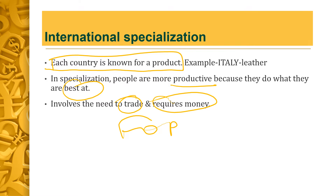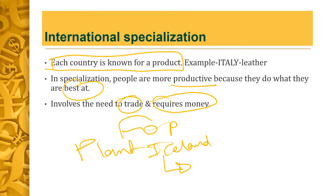Trade is important because, for example, to plant in Iceland it is very costly — they have to put up greenhouses and maintain the proper temperature and heat. So it would be much cheaper and better for Iceland to import fruits and vegetables from other countries.